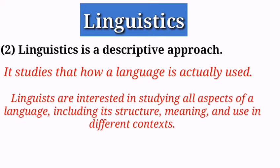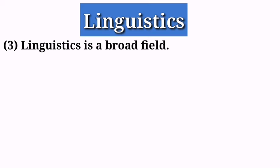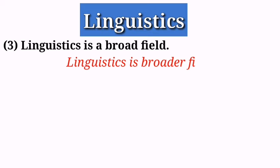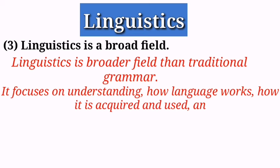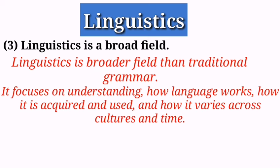The next main point is that linguistics is a broad field. It is vaster than traditional grammar because this field focuses on understanding how language works, how it is acquired and used, and how it varies across cultures and time. It studies every aspect of a language — how a language differs from other languages and how it changes with time.